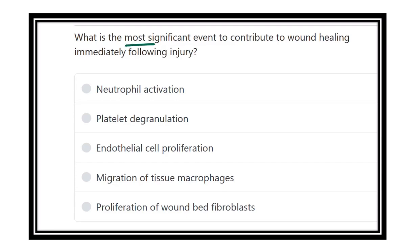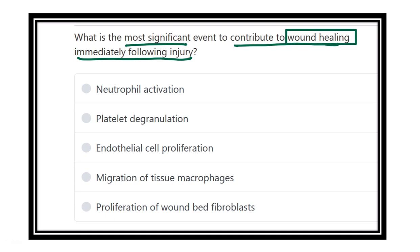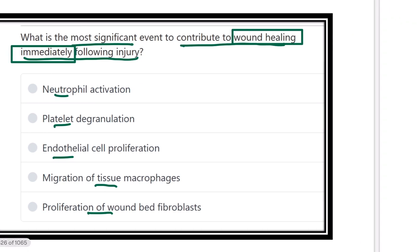What is the most significant event to contribute to wound healing immediately following the injury? Which of the following events occurs most immediately after a wound formation or cut or operational injury? The options are: neutrophil activation, platelet degranulation, endothelial cell proliferation, migration of tissue macrophage, or proliferation of the wound bed fibroblast.